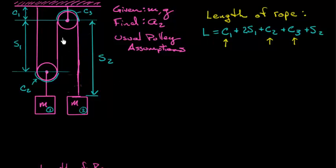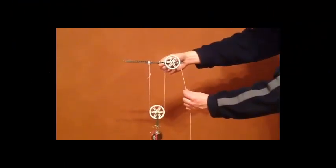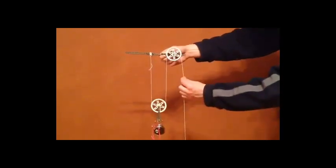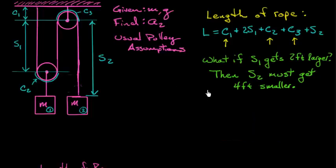And as the blocks move, the only segments of rope that change their length are the S's, the S1 and the S2. Now I want to do a little thought experiment, if you'll bear with me. So let's suppose, what if S1 gets larger by 2 feet? So 2 feet larger. In other words, block number 1 is going to move down 2 feet so that S1 gets 2 feet larger. Well, in order for the length of the rope to remain constant, if S1 is getting 2 feet larger, then S2 has to get 4 feet smaller. Do you see it? That's the only way that this rope can remain its length. In fact, you can see it with this pulley. Notice how the block in my hand moves in a 2 to 1 relationship. That's in order to keep that string a constant length.